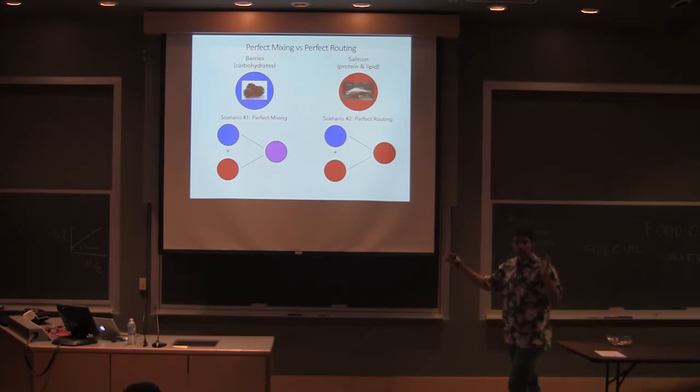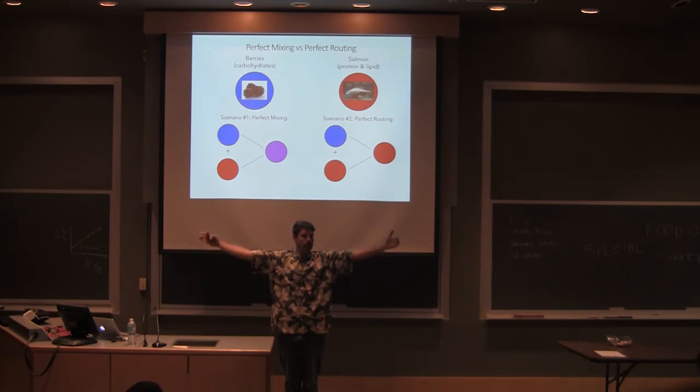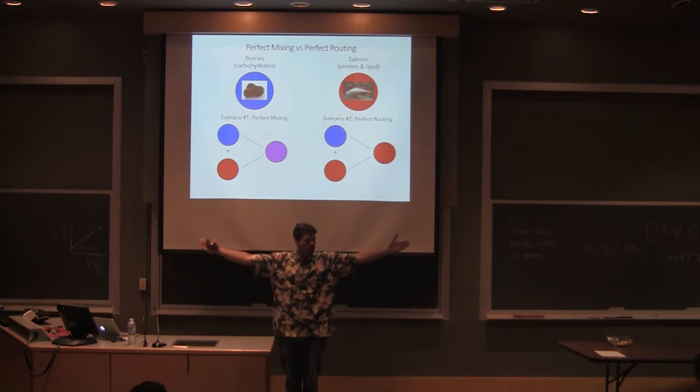So those are two end member spectrums, that's the spectrum mixing to routing. Those are the two end members. Of course, reality is always somewhere in the middle, but those are our two end member spectrums. Perfect mixing versus perfect routing. Really important concept.